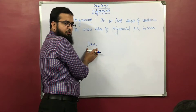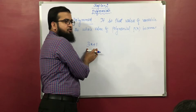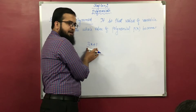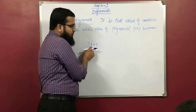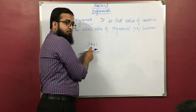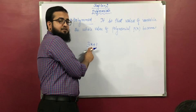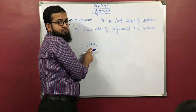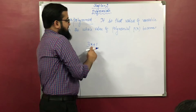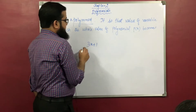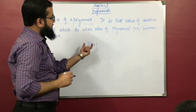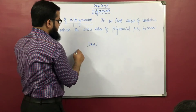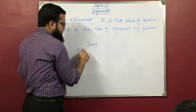To find the zero, we set px equal to 0. So we let px equal 0, and then we calculate the value of x. Whatever value of x we find out, that is the zero of the polynomial. If we have to find out the zero of this polynomial, then we take px equal to 0.